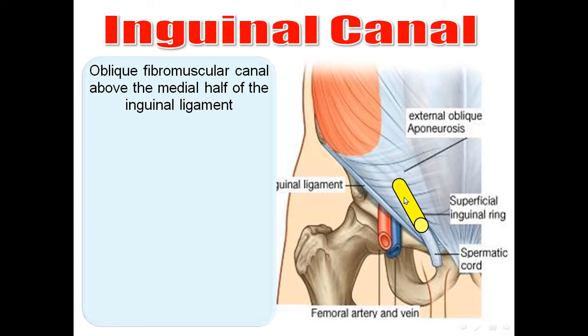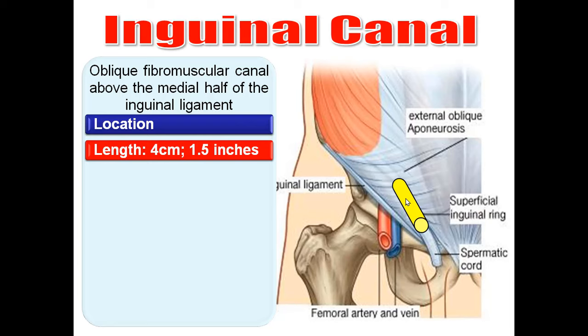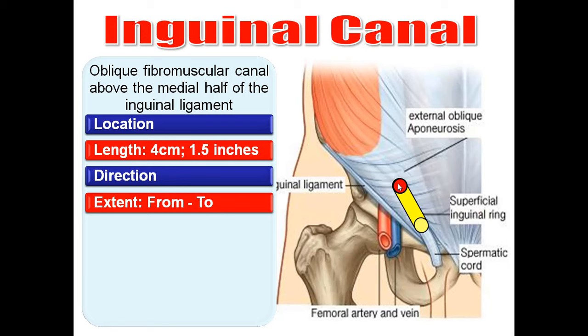The inguinal canal is a fibromuscular canal in the lower part of the anterior abdominal wall above the medial half of the inguinal ligament. It is about four centimeters long, or one and a half inches long. It is directed downward and medially, extending from the deep inguinal ring to the superficial inguinal ring.